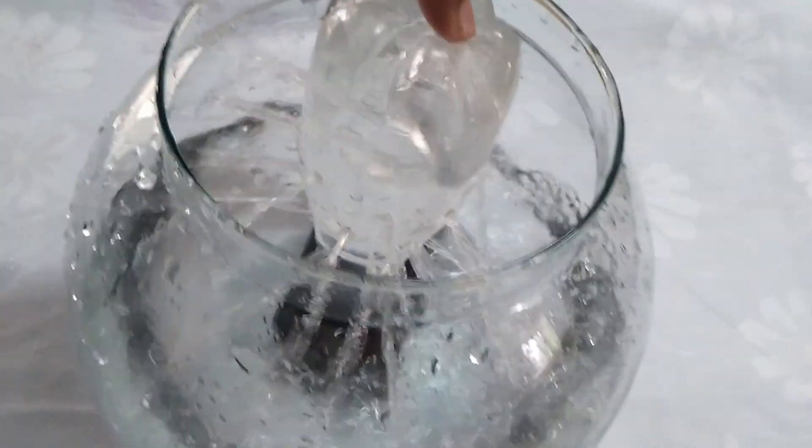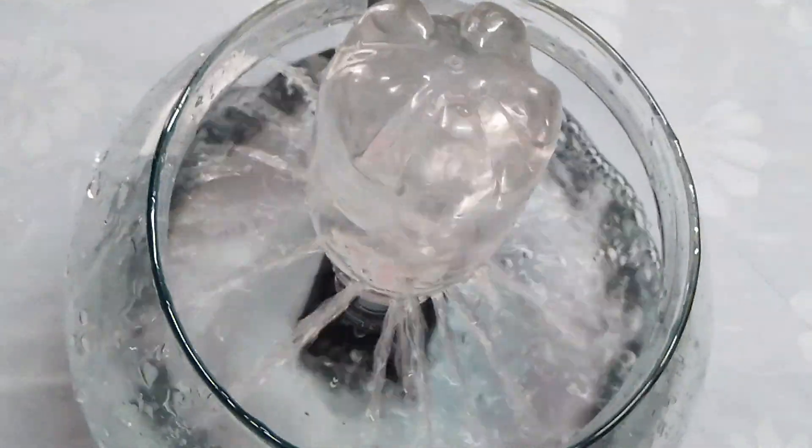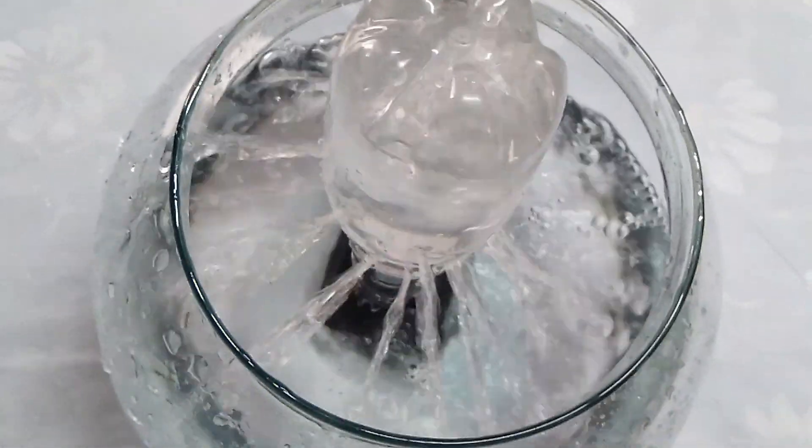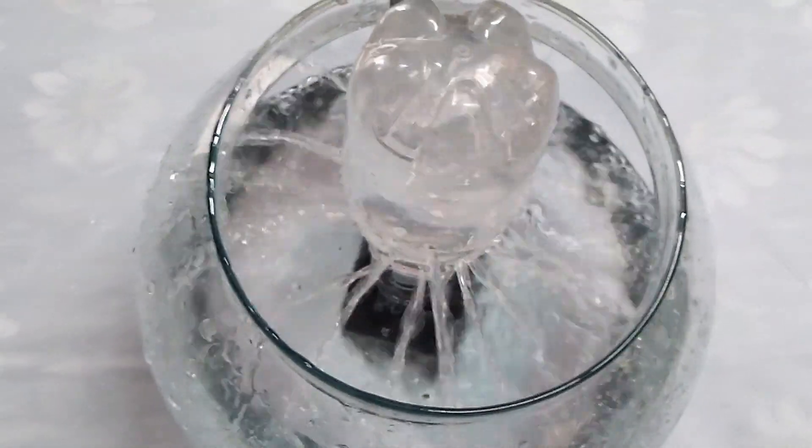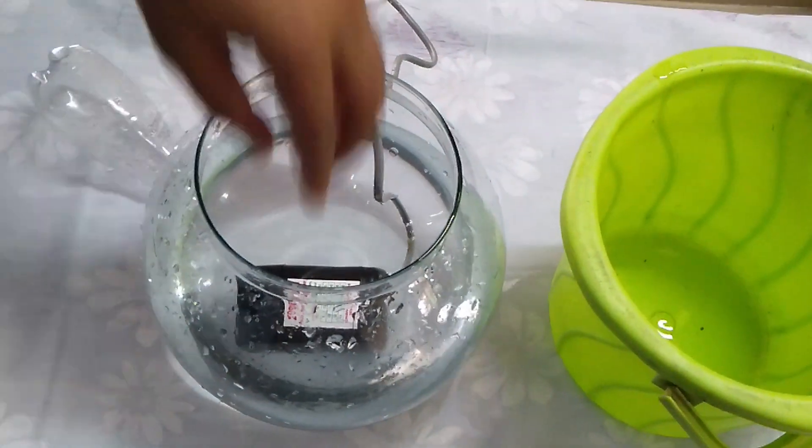Switch on the plug and make sure that water is not falling out of the ball. If the water is not falling from the ball, then we get the exact fountain effect that we want. Now remove the plastic bottle, DC motor, and remove all water from the glass ball.